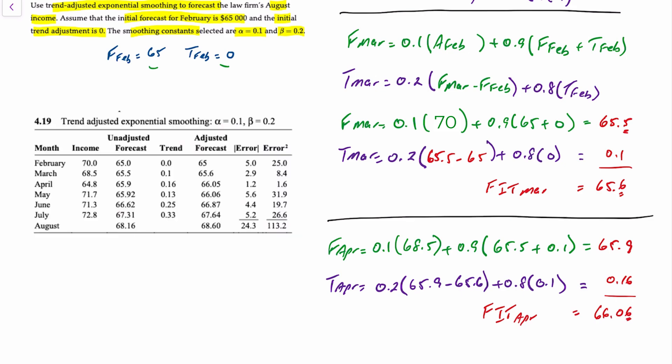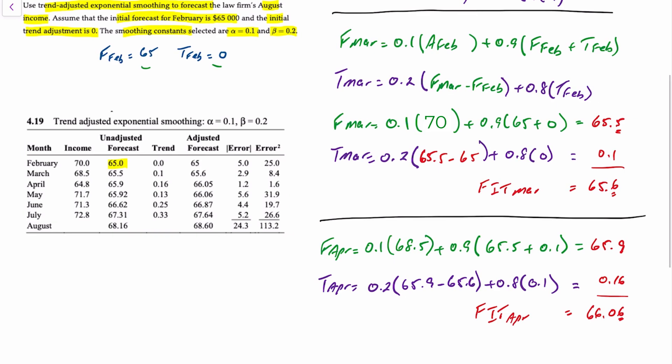Now I'm going to paste in the solution for this so that you can compare. You can see how close we were. Our unadjusted forecast for February was 65, which was provided, and a trend of 0. For March, our unadjusted forecast was 65.5, a trend of 0.1, and a trend-adjusted forecast of 65.6. And then in April, our unadjusted forecast was 65.9 with a trend of 0.16 and an adjusted forecast of 66.05 or 66.06.